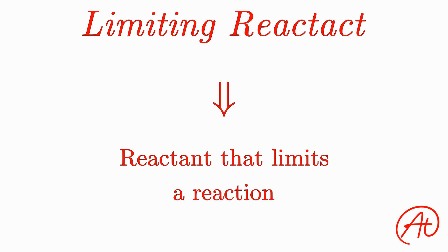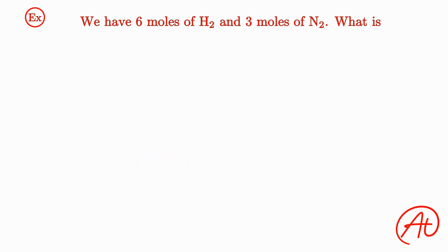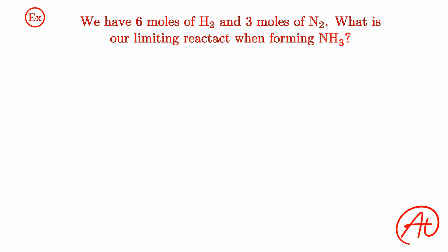Okay, but how do we find which one our limiting reactant is? Well, to do that, let's look at an example. Let's say we have 6 moles of hydrogen, H2, and 3 moles of nitrogen, N2. What is our limiting reactant when forming ammonia, NH3?